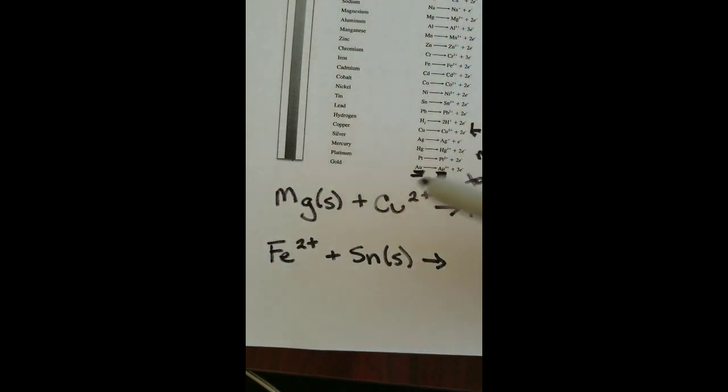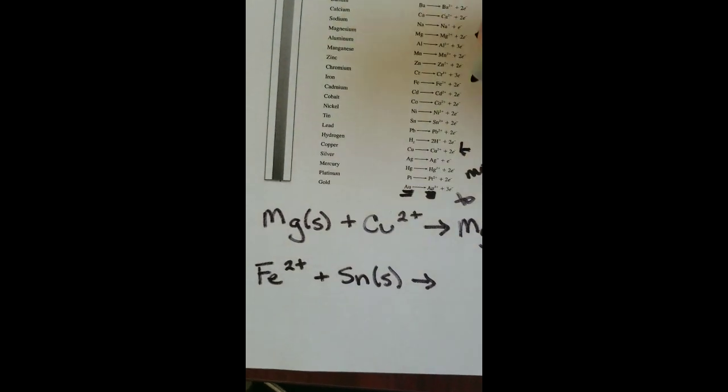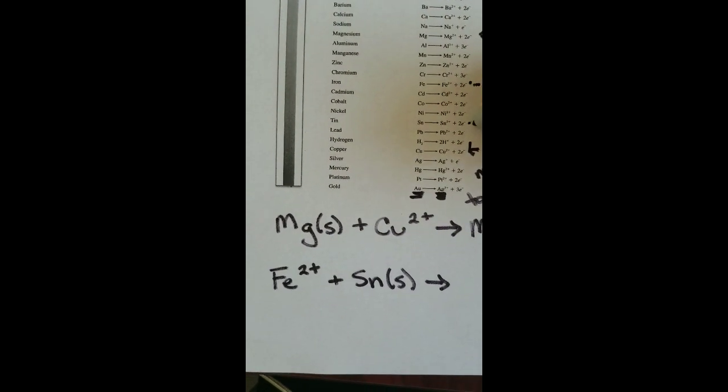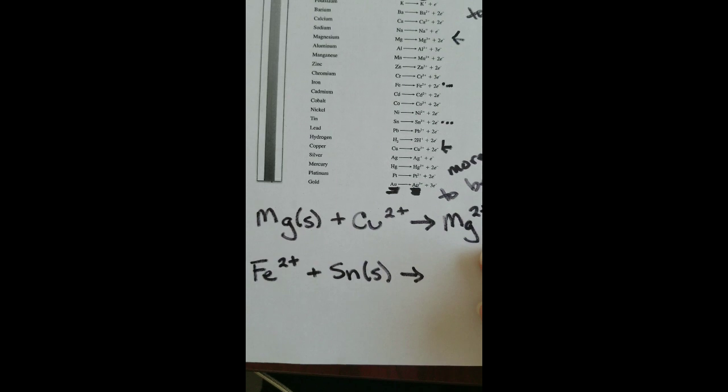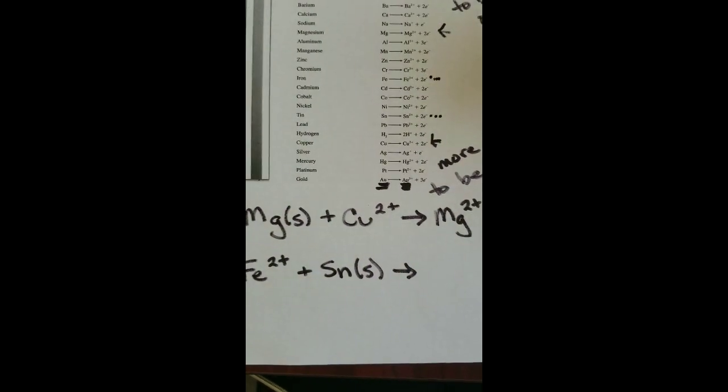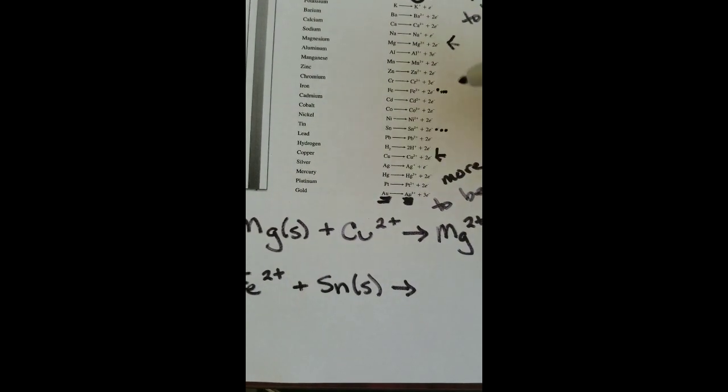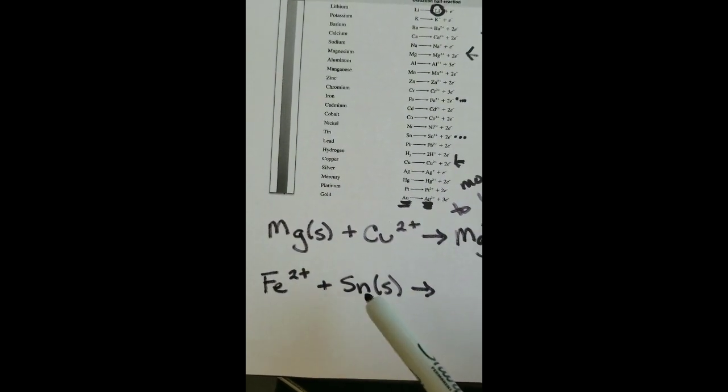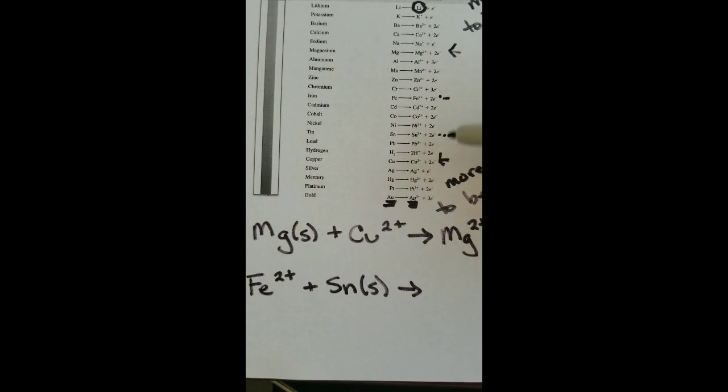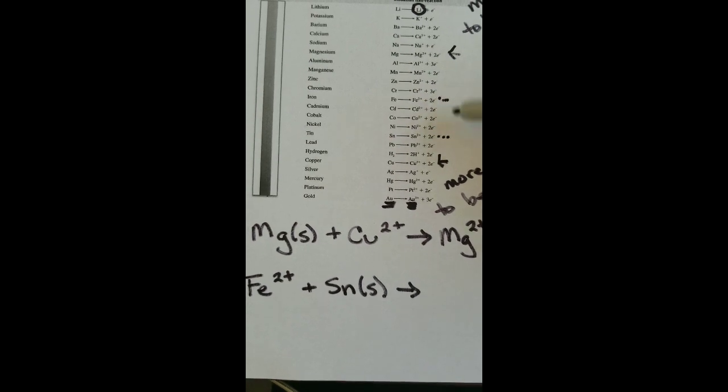So we could try one more. So we could look at iron 2+ and tin solid. So again, I want to find both of these on my chart. So I'm going to find my iron, and there's my iron. And I'm going to find my tin, and there's my tin. I'm using some sort of other dot system just so I know which ones I'm comparing to. Because if you always use arrows, you just have a lot of arrows. So right now, I have iron 2+ in my reaction. I have tin solid. When I look on this chart, I can see iron is higher than tin.